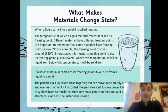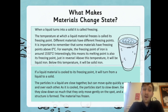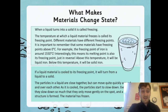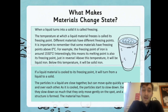Now we're going to look at freezing — when a liquid turns into a solid. The temperature at which a liquid freezes is called its freezing point. Different materials have different freezing points, and it's important to remember that some materials have freezing points above 0 degrees Celsius. For example, the freezing point of iron is around 1,550 degrees Celsius. Interestingly, this means its melting point is also its freezing point just in reverse — above this temperature it will be liquid iron, but below it will be solid iron.